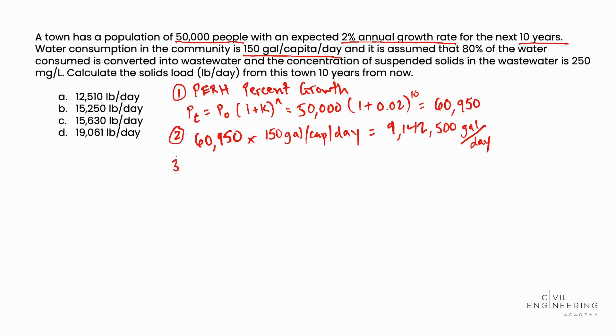Then in step 3, we'll calculate the wastewater flow 10 years from now. So we'll take the water usage found in step 2, which we said was 9,142,500 gallons per day, and we'll multiply it by 80% because in the problem statement we're told that 80% of the water consumed is converted into wastewater. So we'll multiply it by its decimal form of 0.8. And that calculation yields the future wastewater flow rate of 7,314,000 gallons per day.